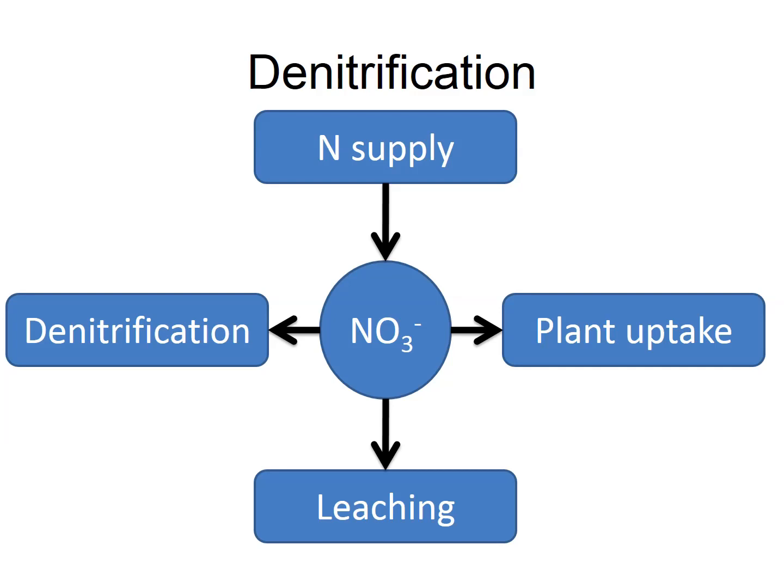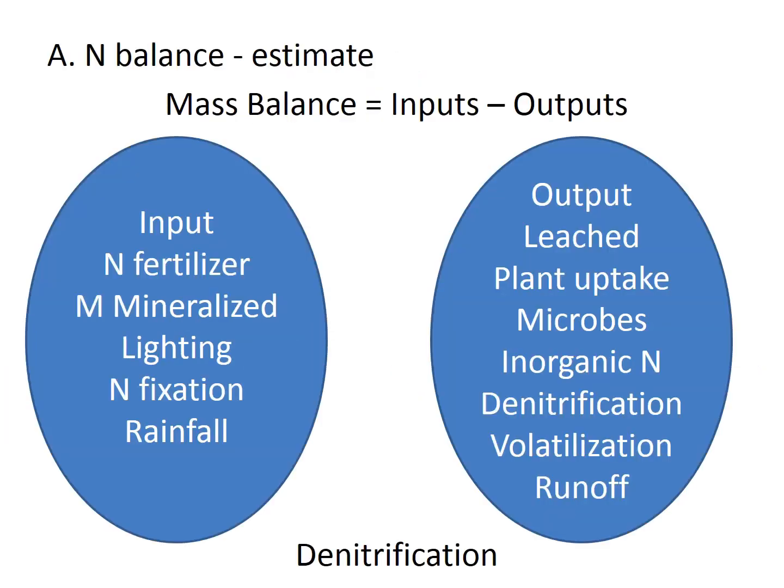Most of the nitrogen supply forms nitrate — and this nitrate can go into plant uptake, microbial uptake, be leached from the soil, or go through the denitrification step. The nitrogen balance in the soil is reflected by inputs and outputs: inputs include fertilizer, mineralization, nitrogen fixation, and rainfall; outputs include leaching, plant uptake, microbial uptake, denitrification, volatilization, and runoff. The mass balance is the difference between inputs and outputs.